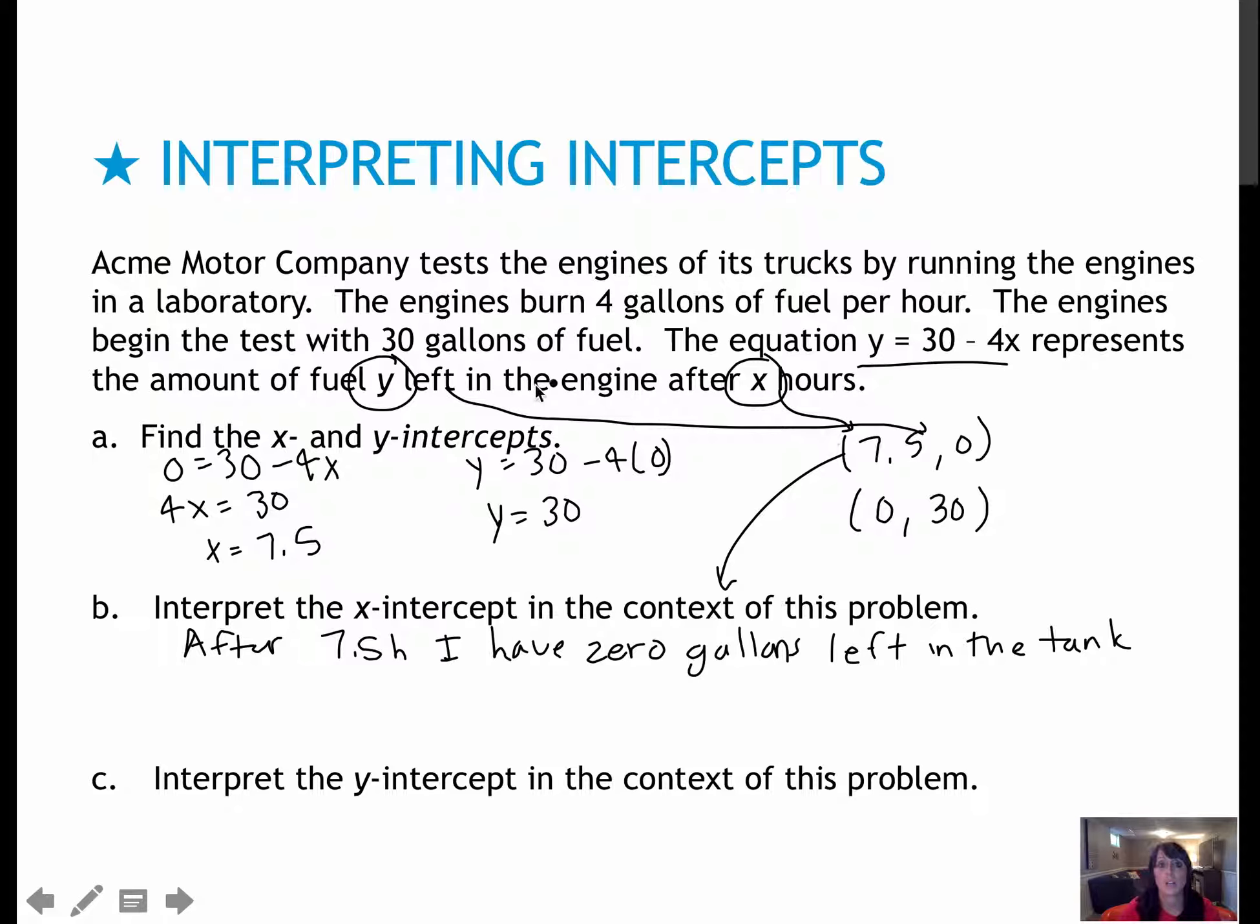Doing the same for the y-intercept, which is (0, 30), means when x is 0, y is 30. So after 0 hours, I have 30 gallons left in the tank. So that would mean when I begin the experiment at 0 hours, there are 30 gallons of fuel in the tank.